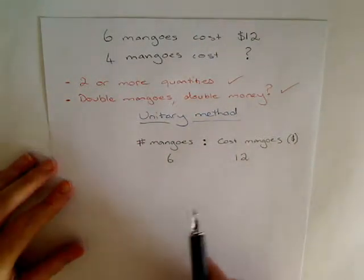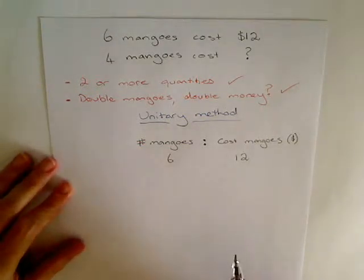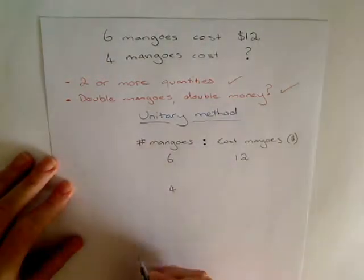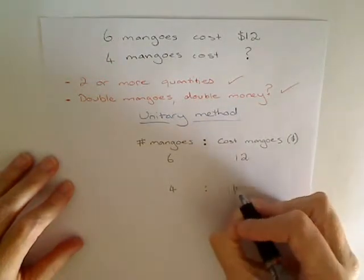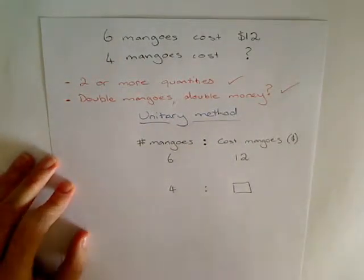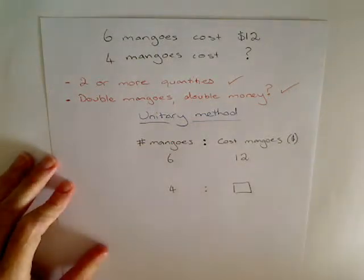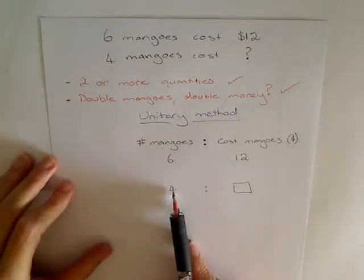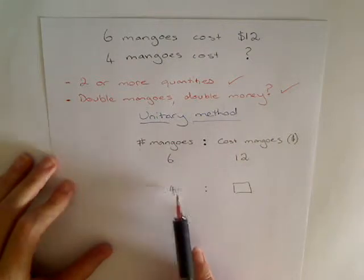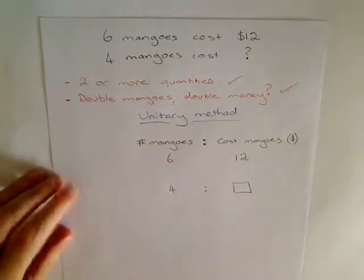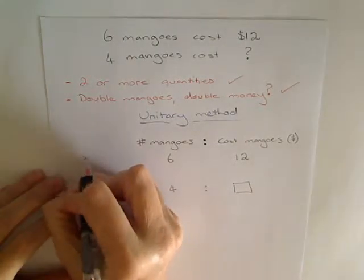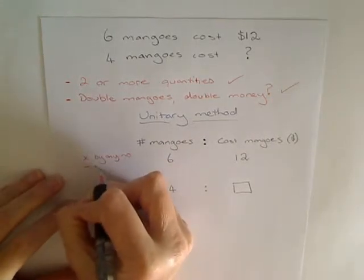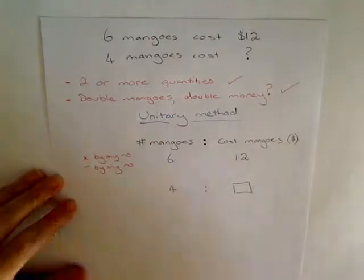Next, think about where you want to end up — what's the last line in your working? What I want at the end is the cost for 4 mangoes. That needs to be the last line. Now I can choose any unit I like to get from 6 to 4, working only on the side where I have numbers. With the unitary method, you can multiply by any number or divide by any number, but you cannot add or subtract.